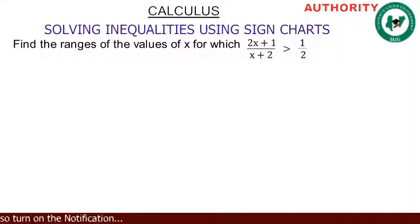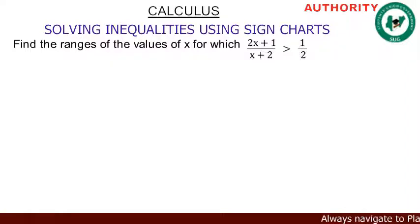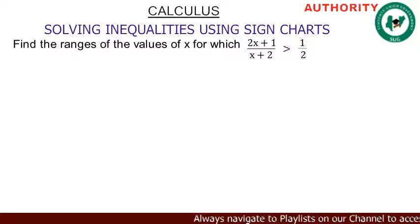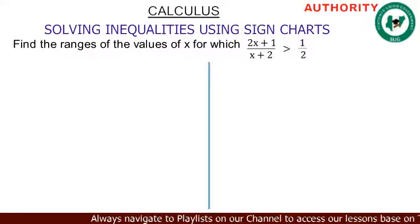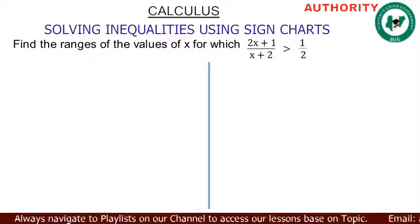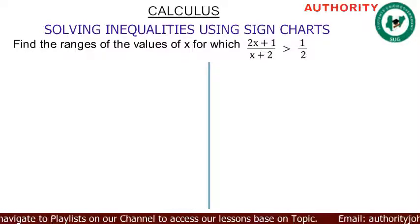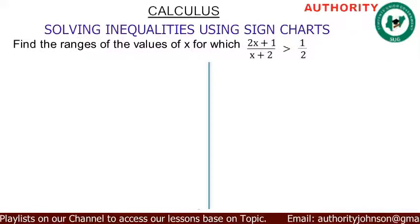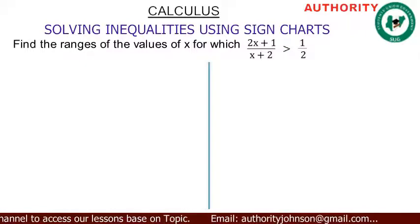Find the range of values of x for which (2x + 1) / (x + 2) is greater than 1/2. Pay attention to this. For the solution, what we're going to do is find the LCM of both expressions. The LCM will be 2(x + 2).